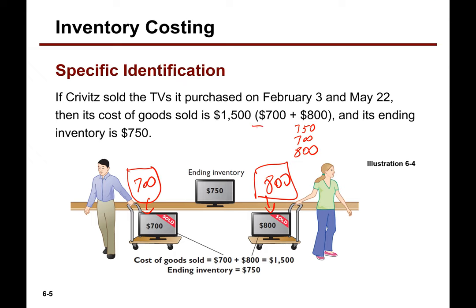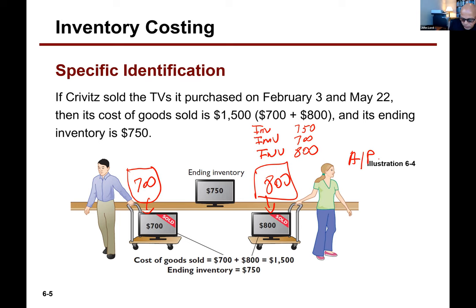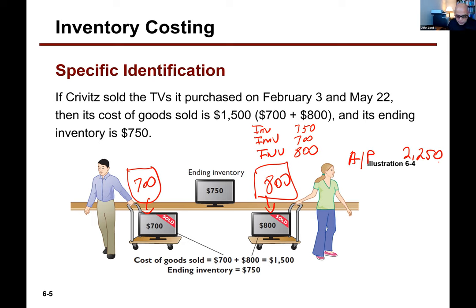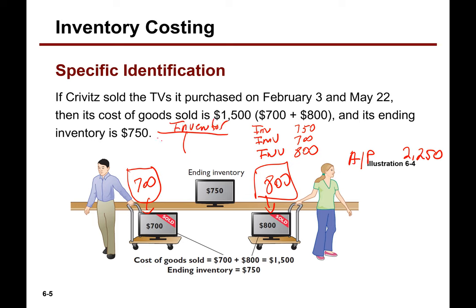Debit inventory and credit accounts payable. I'm going to debit inventory each time. You could have some that wrote them all in one line item. And then I'm going to credit accounts payable. What's the total? $750 plus $700 plus $800 is $2,250. So we would debit inventory for those amounts, and our inventory would then show those three amounts.